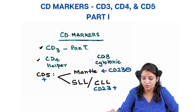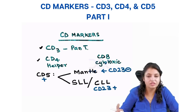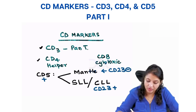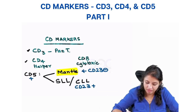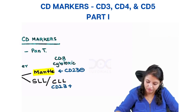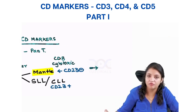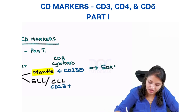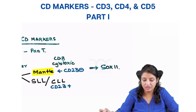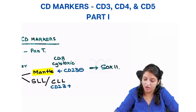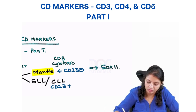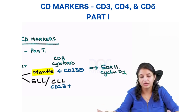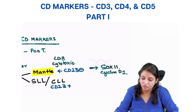CD5 positive and CD23 negative is mantle cell lymphoma; CD5 positive and CD23 positive is CLL. The most specific marker for mantle cell lymphoma is SOX11. Also remember that cyclin D1 is positive in mantle cell lymphoma.